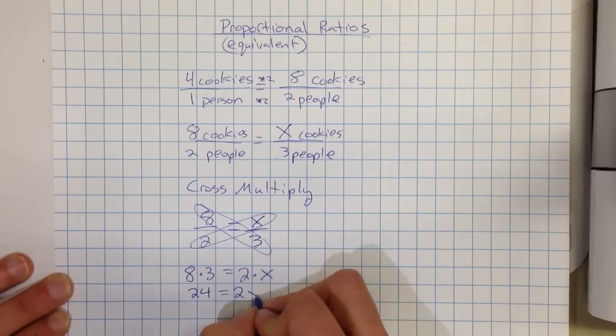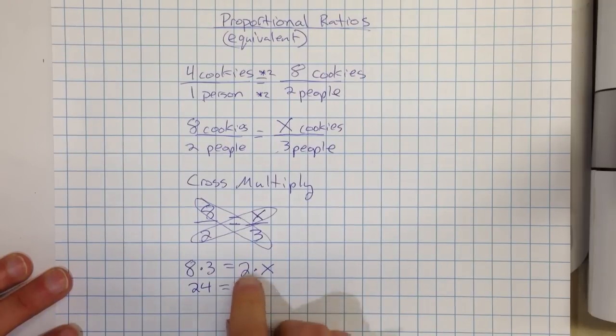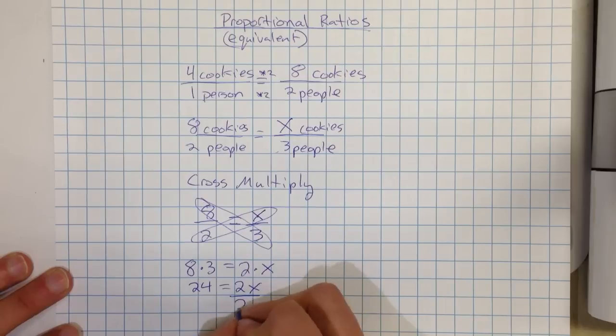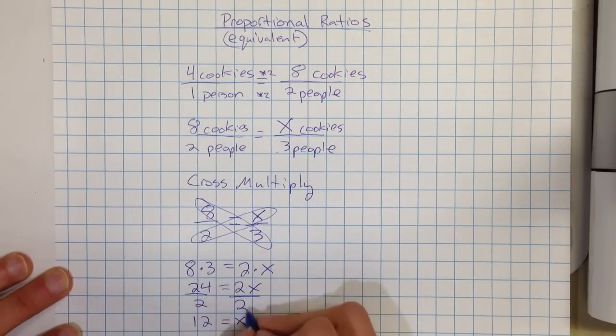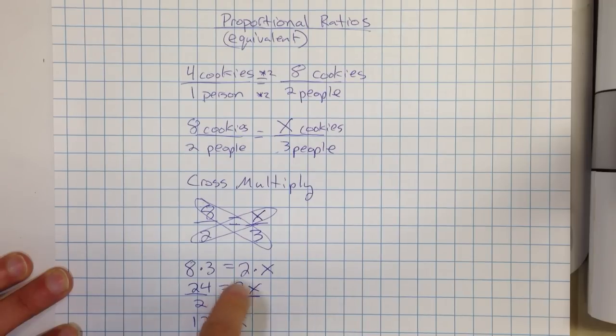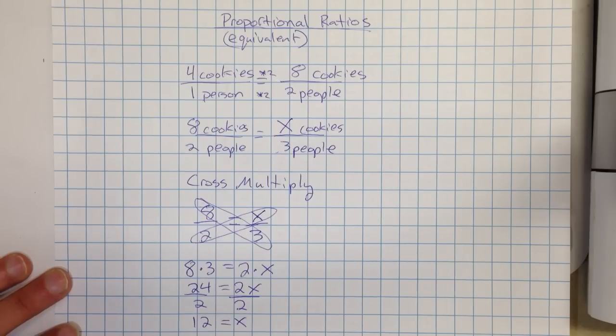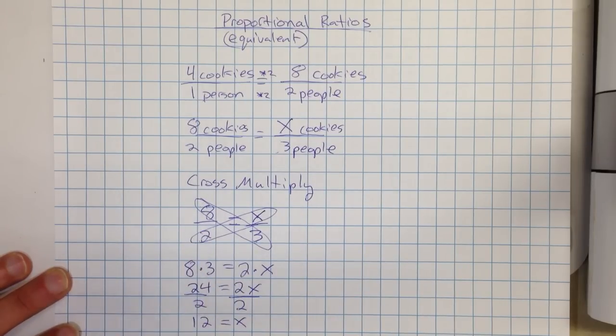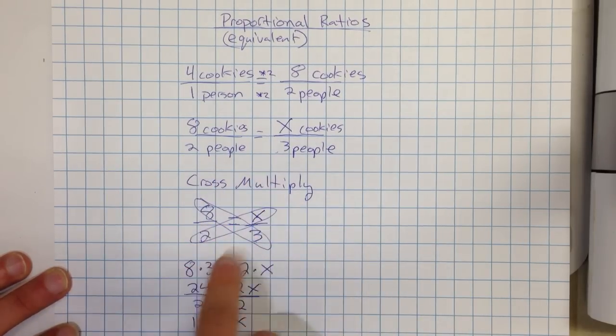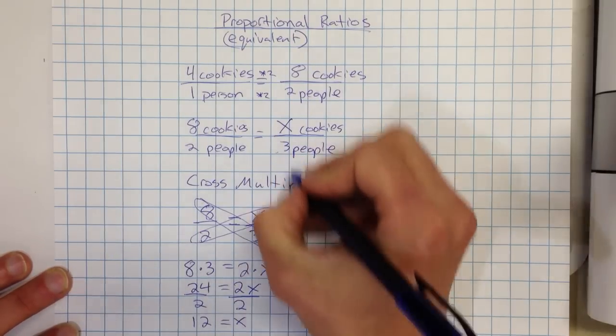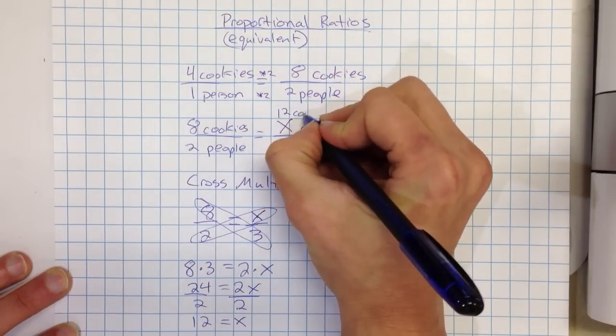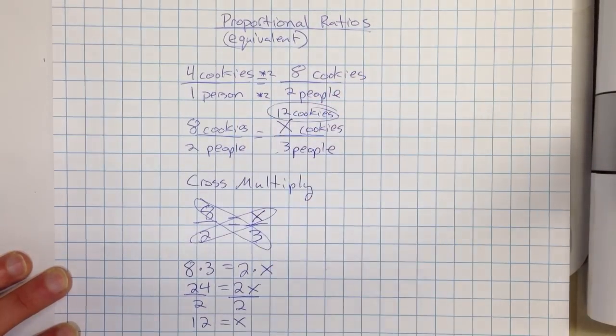Now I have 24 equals 2X, knowing that 2X is the same thing as 2 times X. And then we divide to solve it. So I have X equals 12. I divided by 2 because I looked outside of the variable, multiplied by 2, opposite of dividing by 2. Whenever you're cross-multiplying, you will almost always be dividing afterwards. So you cross-multiply, and then divide by whatever is being multiplied by the variable. So that means for 3 people, to make a proportional ratio, I would have 12 cookies. So I would simply put 12 cookies up here. Okay. That was my answer.